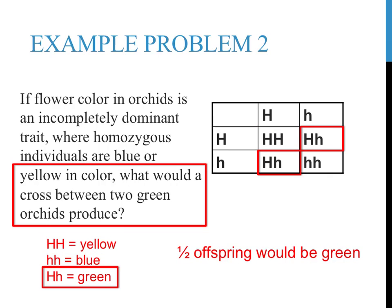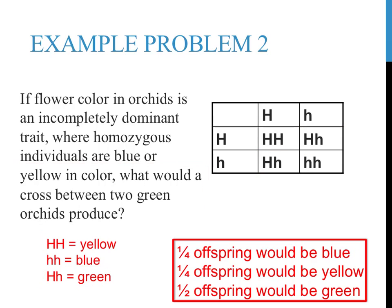The remaining two squares of this Punnett square are heterozygous for the trait. Heterozygous individuals, using our key, would appear green in color. Two-fourths, or one-half of the offspring, in a cross between two green-flowered orchids, would appear green in color. Putting all of this information together, in a cross between two green-flowered orchids, you could expect one-quarter of the offspring to be blue-flowered, one-quarter to be yellow-flowered, and one-half to be green-flowered in color.